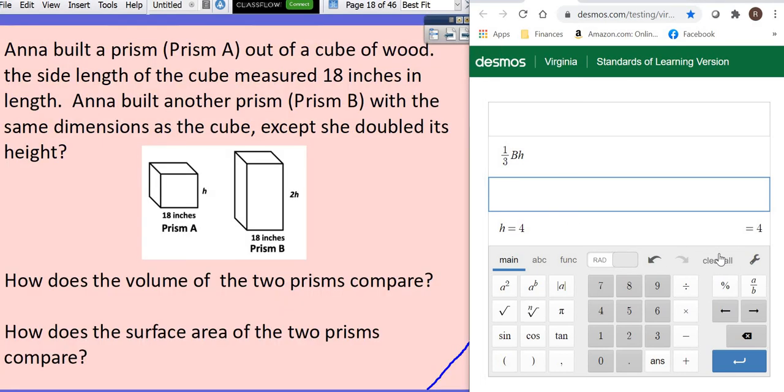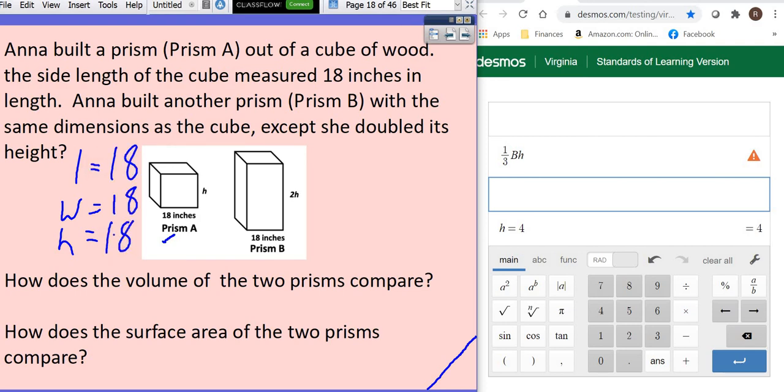This one says that Anna built a prism, one prism, out of a cube of wood. The side lengths of the cube measured 18 inches. So we've got that right here, prism A. Then Anna built another prism with the same dimensions as the cube she built, except she doubled its height.